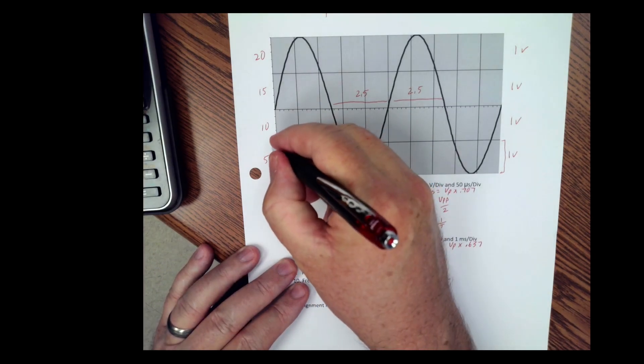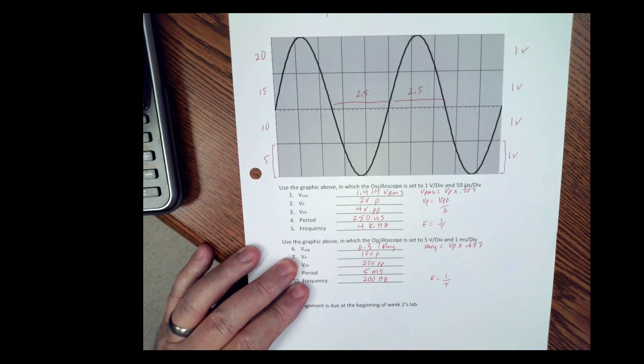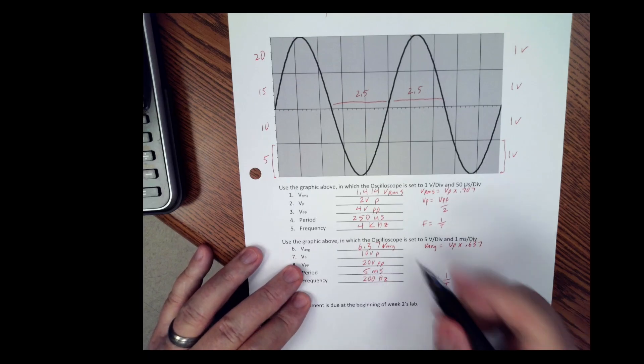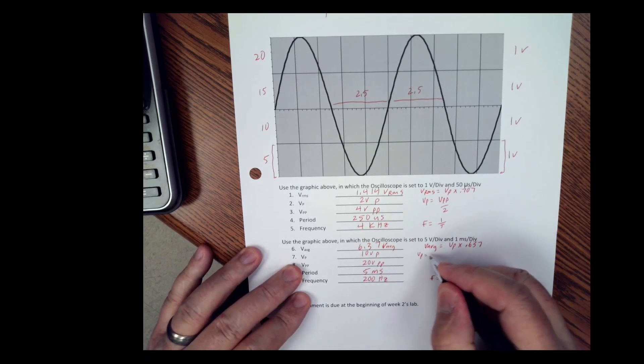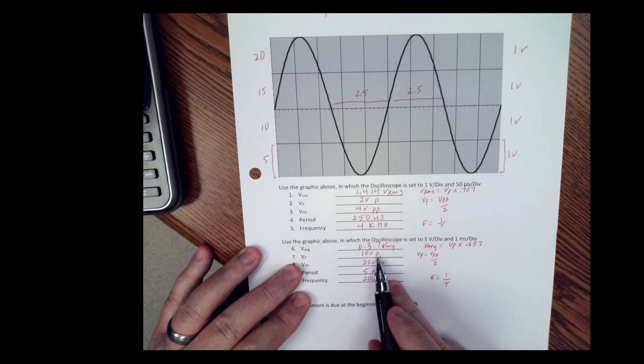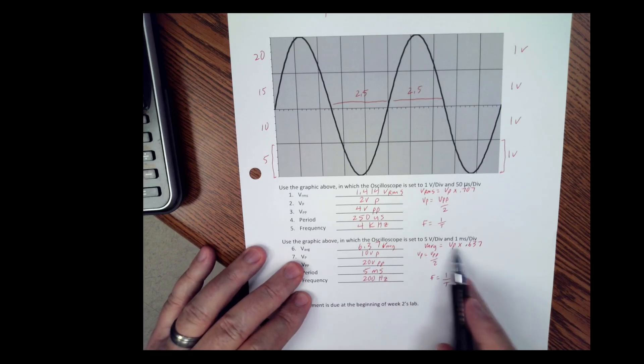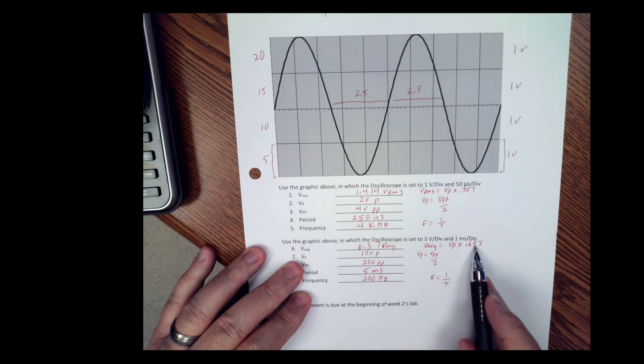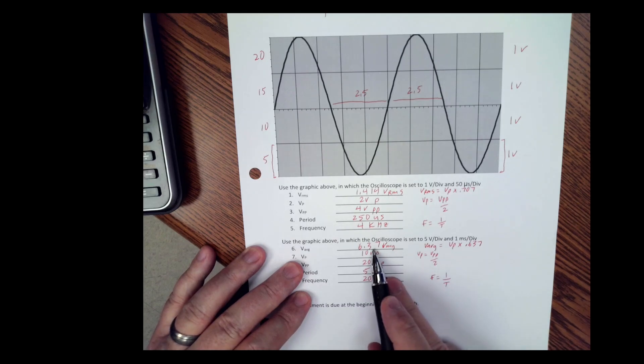So now we're at five volts per division, so it's 5, 10, 15, 20 volts peak-to-peak. VP equals VPP over two, which is 10 volts peak. And then V average is VP times 0.637, which comes out to 6.37 volts for the average.